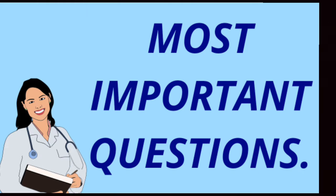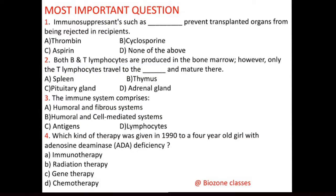Question number 1: Immunosuppressants such as — fill in the blank — prevent transplanted organs from being rejected in recipients. Options are A. Thrombin, B. Cyclosporine, C. Aspirin, D. None of the above. The correct answer is B, that is cyclosporine.